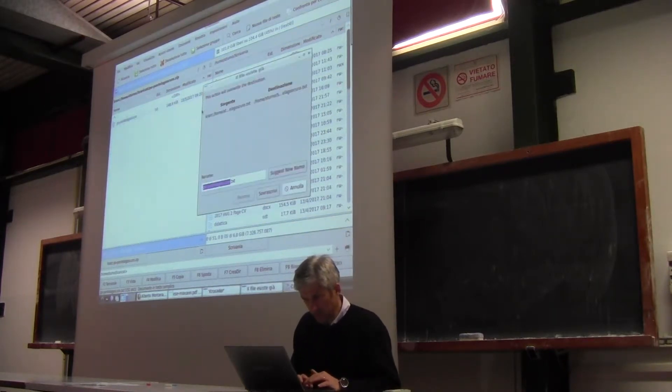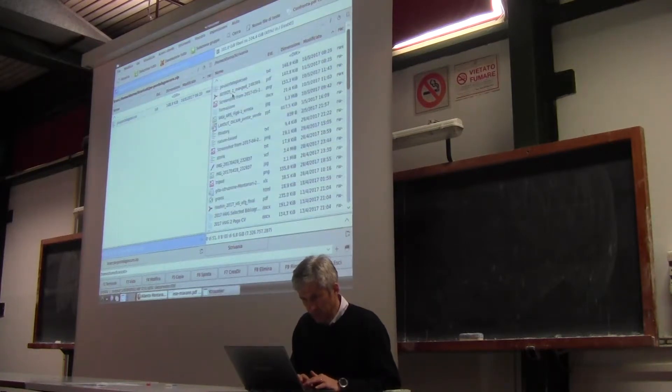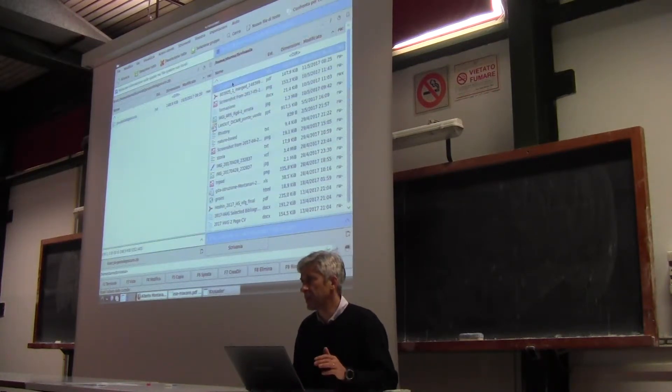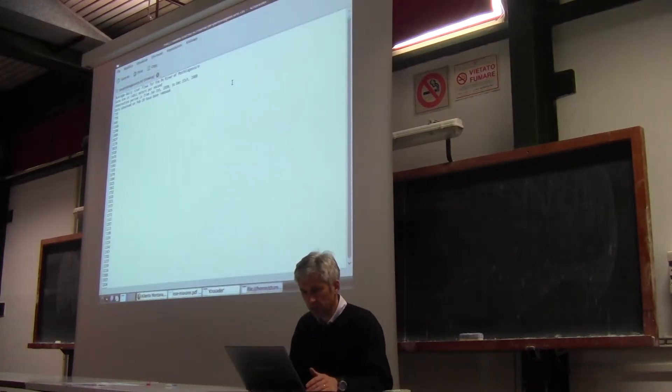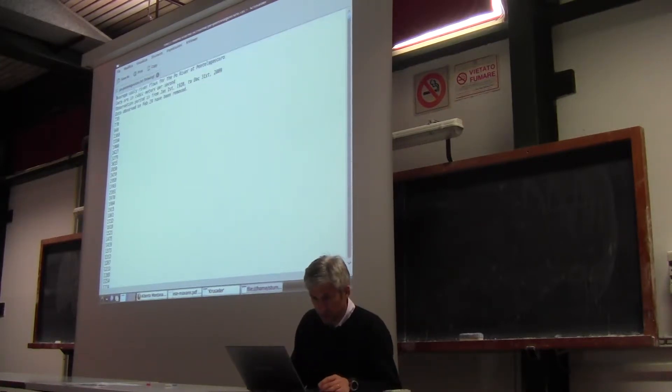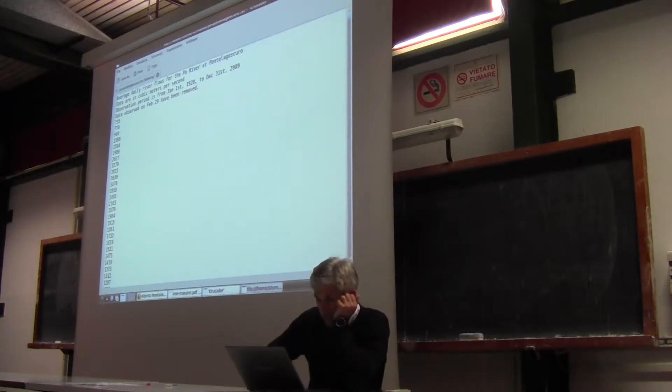Okay, here it is. First of all, let me see if there are headings or something that I need to skip. If I look at the file you see that there are four lines to skip. Let's read what is written here: average daily flows for the Piave River at Ponte Lago Scuro, data are in cubic meters per second, observation period is from January 1st 1920 to December 31st 2009.